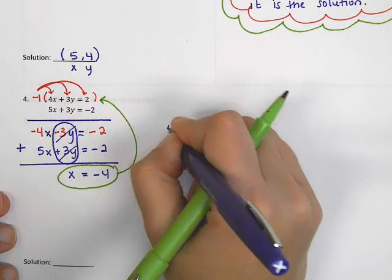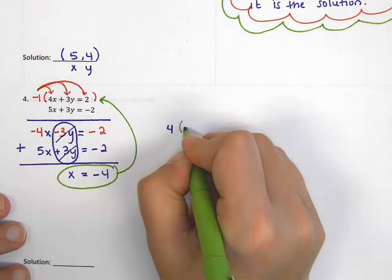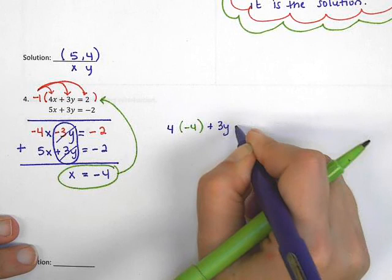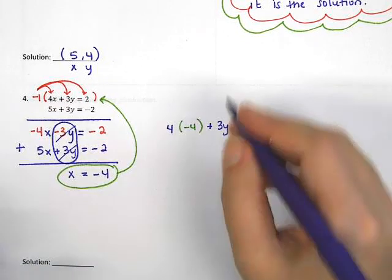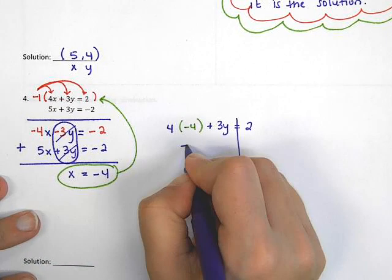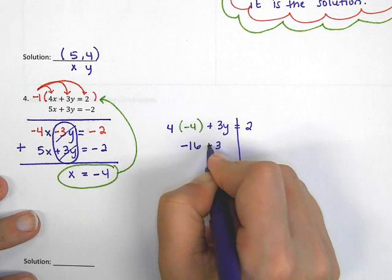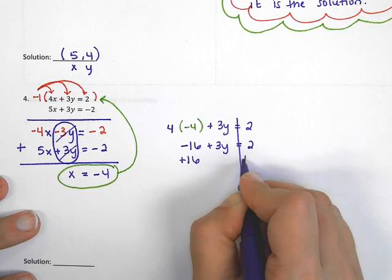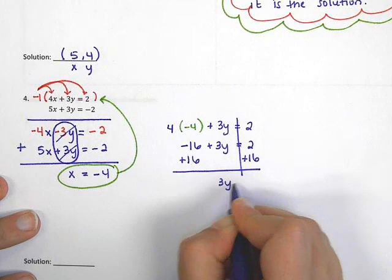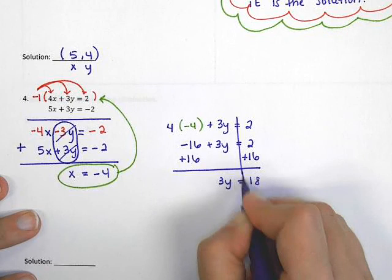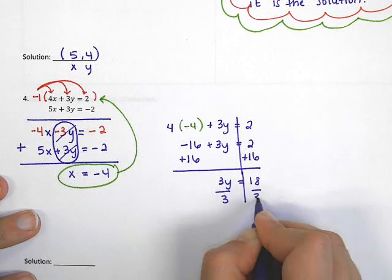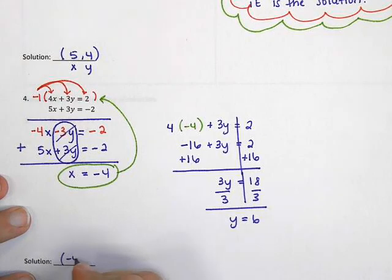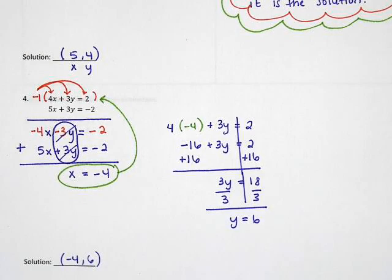Now I take this negative 4 and plug it into the original problem to find y. So 4 times negative 4 plus 3y equals 2. That gives negative 16 plus 3y equals 2. Adding 16 on both sides: 3y equals 18. Dividing by 3: y equals 6. My final answer is (negative 4, 6).